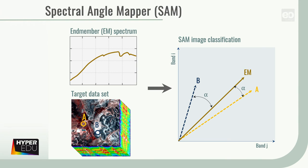One of them is the spectral angle mapper, or SAM. SAM determines the spectral similarity between each image spectrum and a number of chosen pure reference spectra, the so-called end members, by calculating the angle between the spectra and treating them as vectors in a space with dimensionality equal to the number of bands. The smaller the angle, the closer the match to the reference spectrum, and the more likely the image pixel represents the same material on the ground. Since only the direction of the spectra is used and not their length, the technique is relatively insensitive to illumination differences.